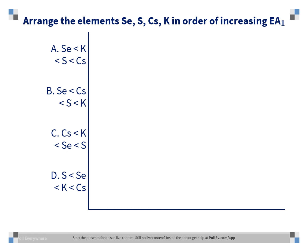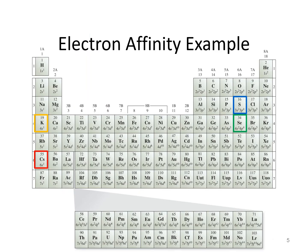The correct answer is C, cesium, then potassium, then selenium, then sulfur. We can walk our way along the periodic table to find the answer. The lowest electron affinity will be in the lower left of the periodic table, so that would be cesium in this problem. We go up and right to get to potassium, right to get to selenium, and up to get to sulfur.